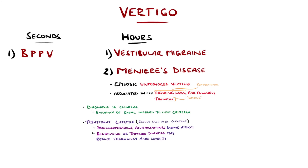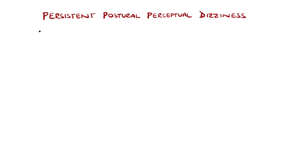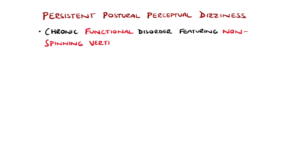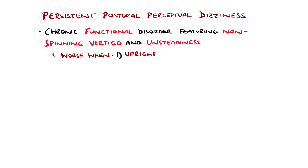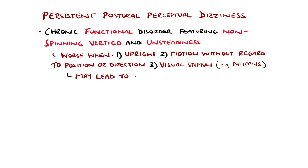A relatively new condition featuring another acronym with multiple P's is PPPD — persistent postural perceptual dizziness — which, although features dizziness in the name, describes a chronic functional condition commonly featuring non-spinning vertigo and unsteadiness, with symptoms typically lasting several hours. It is often without specific provocation, but is worse when upright, when there is motion without regard to direction or position, or exposure to visual stimuli, for example complex carpet patterns or people crossing roads. This leads to avoidance of these stimuli, which can be severely limiting, for example with stairs or roads.